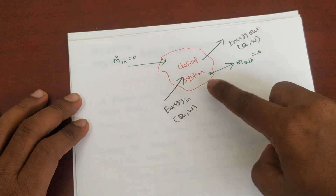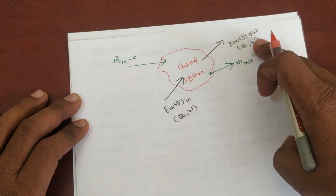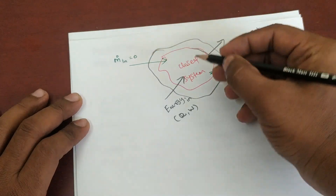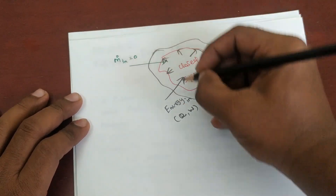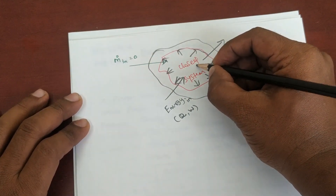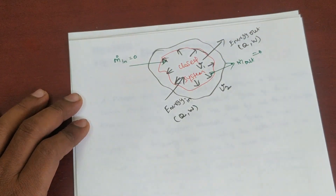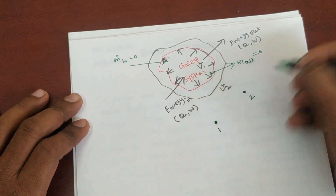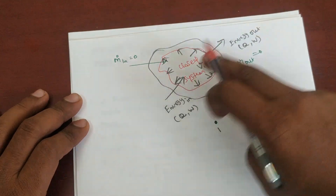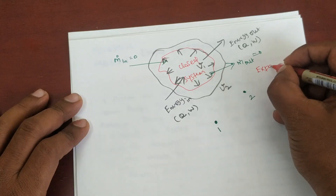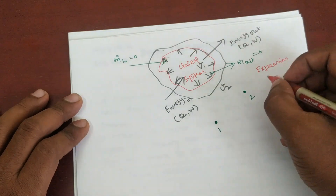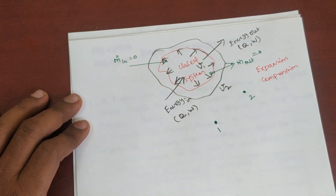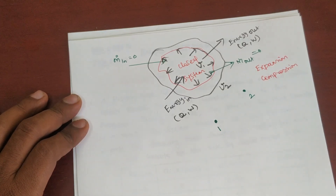What kind of work can we do in this path? Only boundary work — changes in the boundary. The system can expand or compress. This is the initial volume V1, after which it changes to V2. This is point number one, this is point number two. So we have expansion and compression of the boundary.